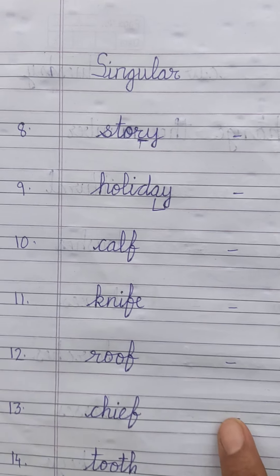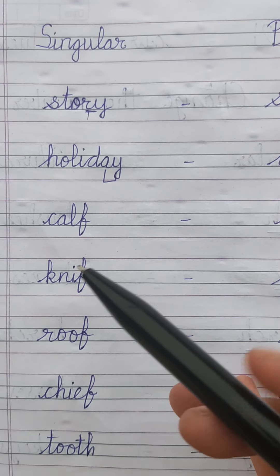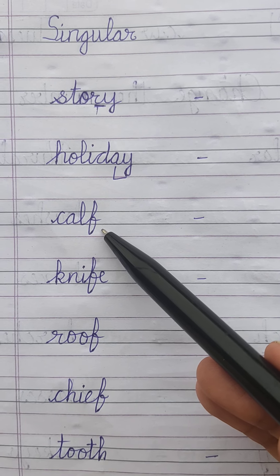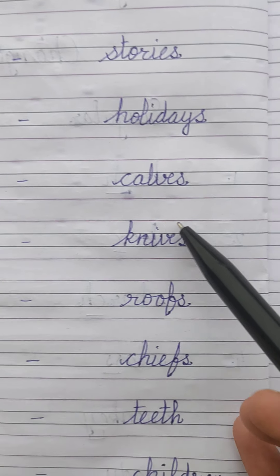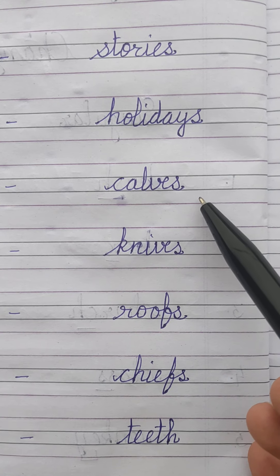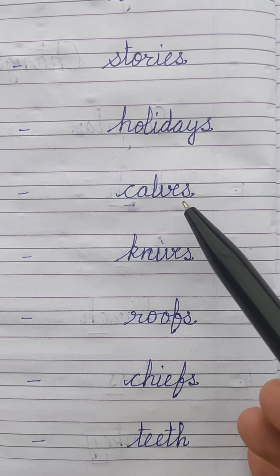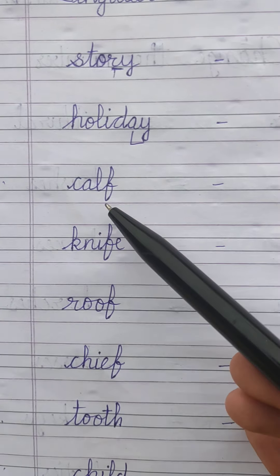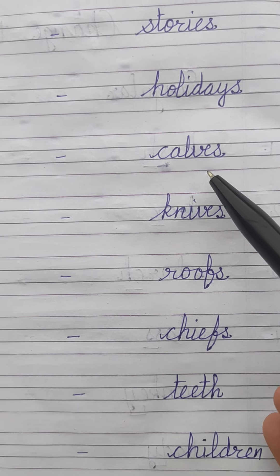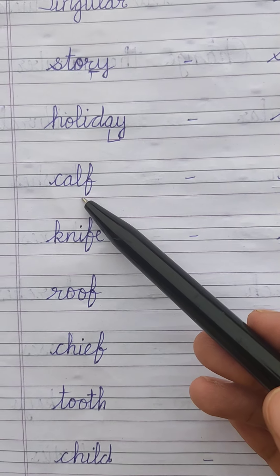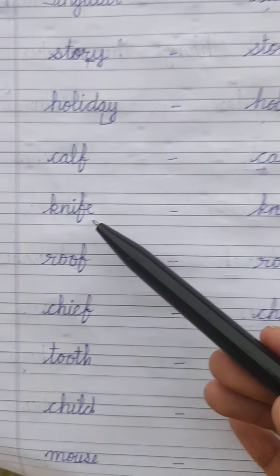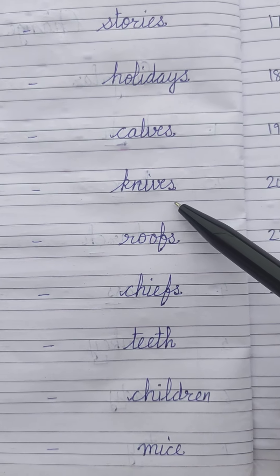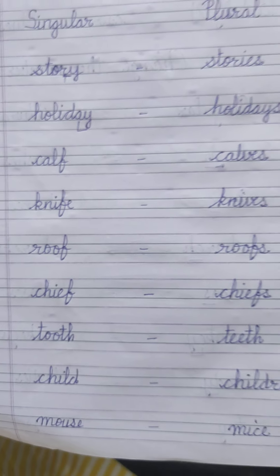Let's learn more. If a word ends with 'f,' then 'f' is converted to 'v,' 'e,' 's' — we remove 'f' and add 'ves' in the plural. For example: calf → calves, knife → knives.